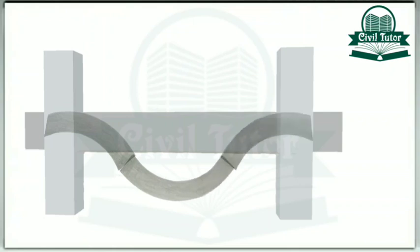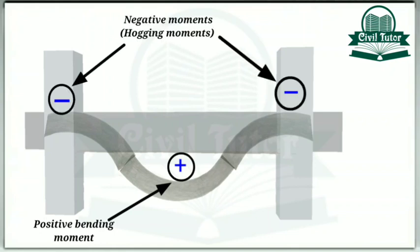The beam will tend to bend in a way that the maximum bending moment will be at the center of the span. There will be positive bending moment at the center of the beam and negative moments or simply hogging moments at both the supports.